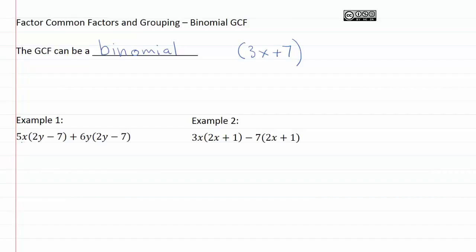Example one says 5x times 2y minus 7 plus 6y times 2y minus 7. When we look at this example, we can immediately see that there's something matching in both halves of our expression.